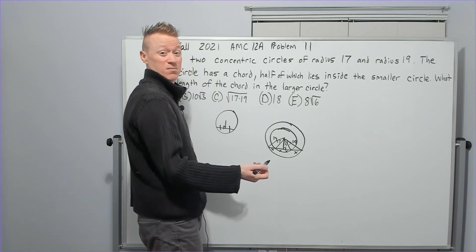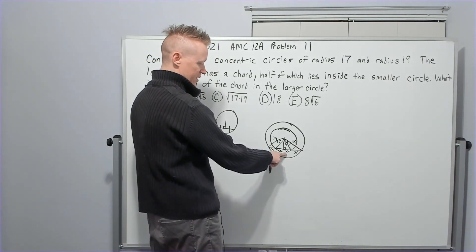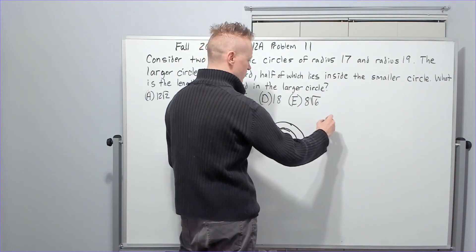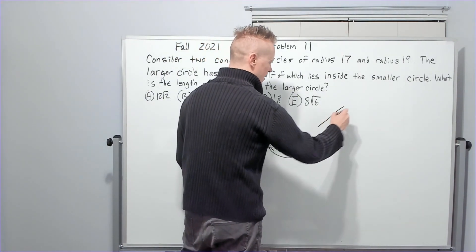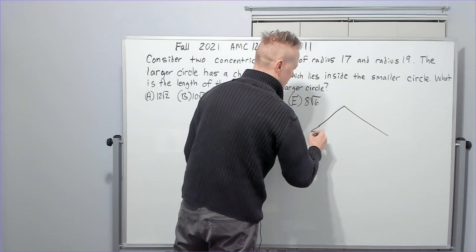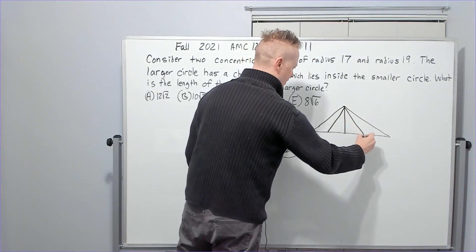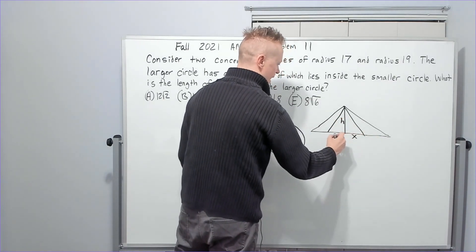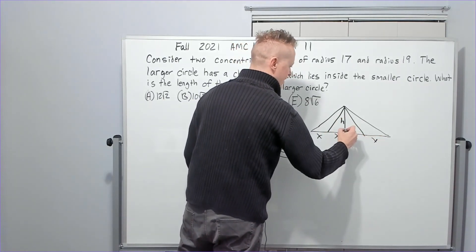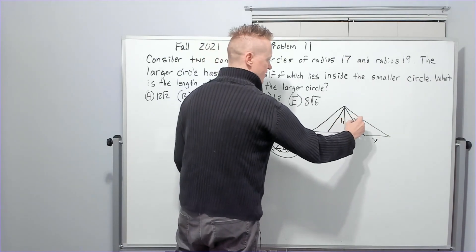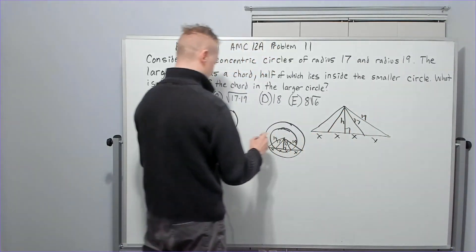It said half of it lies inside. So if I call this length outside X and this length outside X, the length inside would have to be 2X, because that would be half outside and half inside. Makes sense. Then this is going to be X and X. So now we just have a system of equations. H squared plus X squared. I'm going to maybe should I draw a little bit bigger, I guess, and kind of see what's going on.